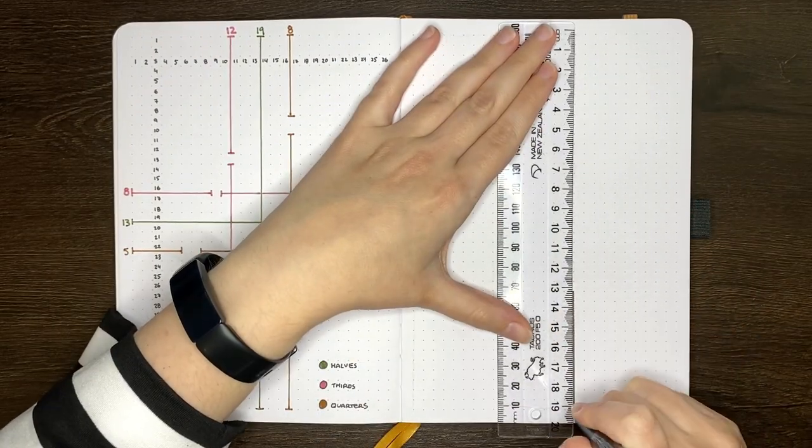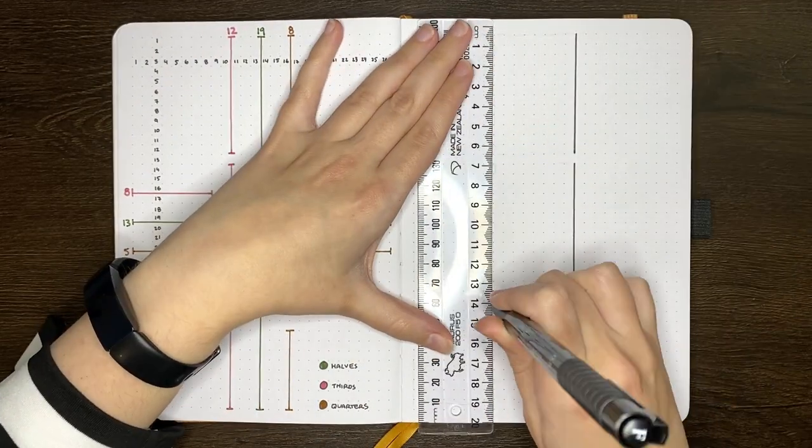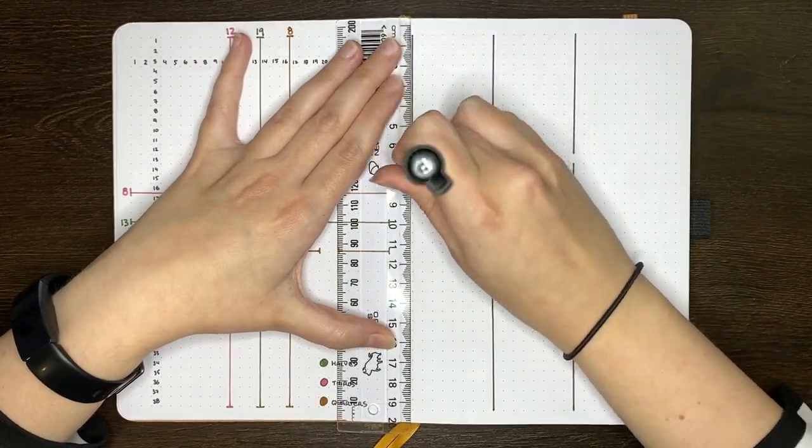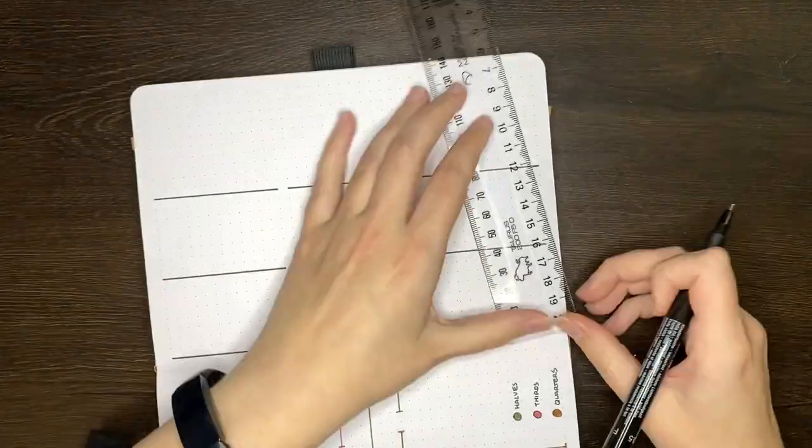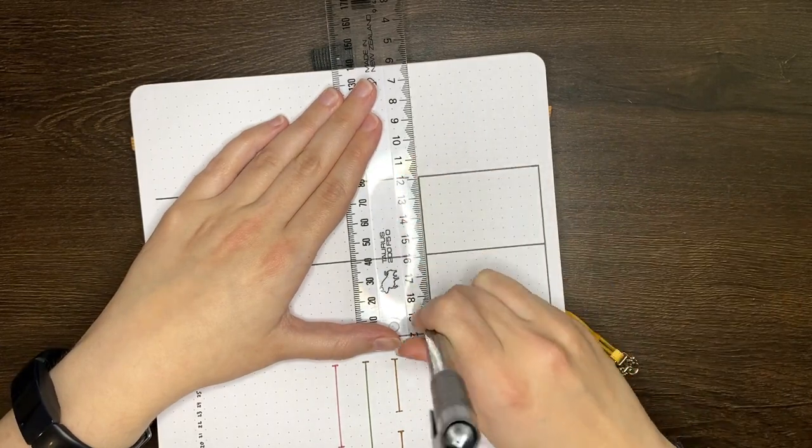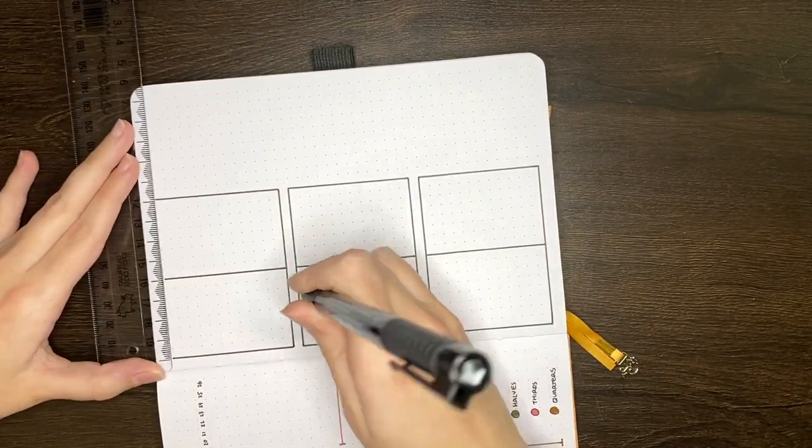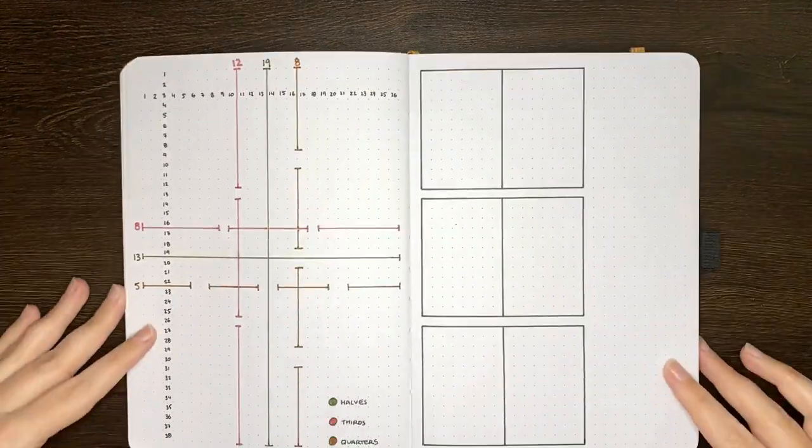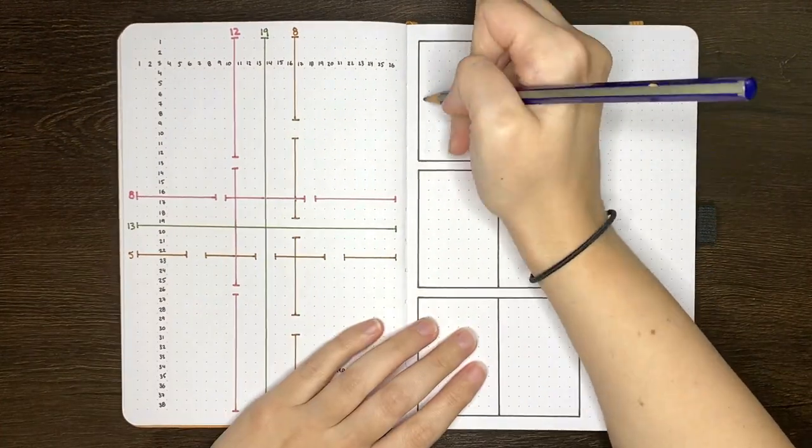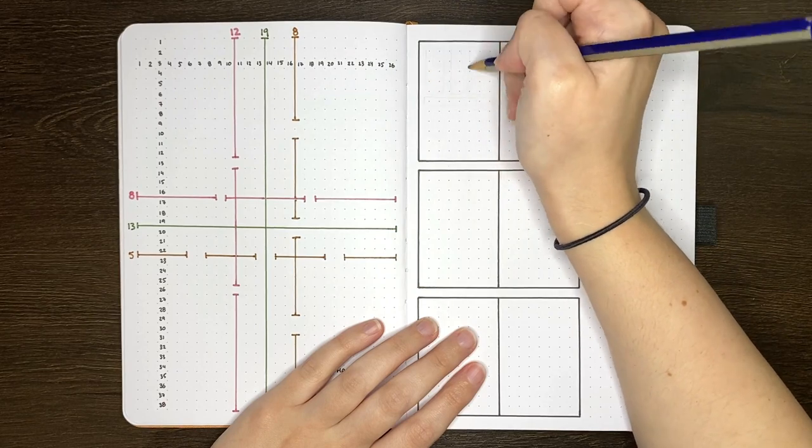Another type of grid spacing reference you could set up is specifically for layouts that you commonly use. On this page here I'm drawing out a space to record the dimensions for commonly used layouts so if I had some layouts that I use time and time again I could record the dimensions for any of the boxes that go onto those here with some little sketches of the pages involved.